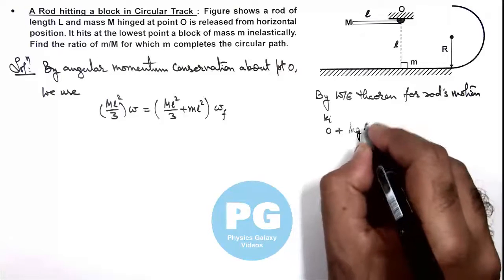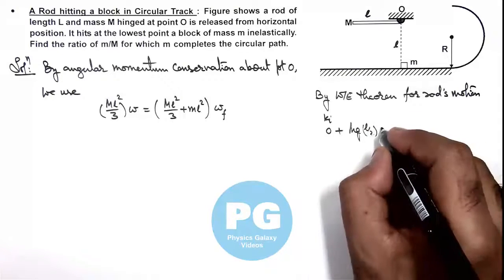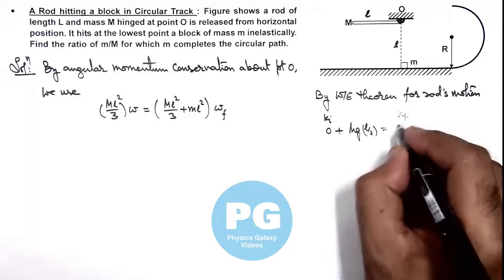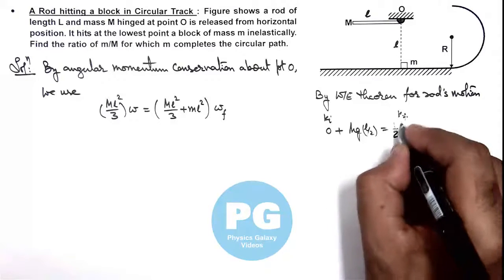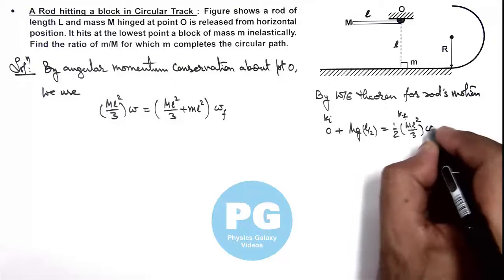Here we can write initial kinetic energy of rod was zero, plus the work done by gravity on the rod we can write as MgL by 2, must be equal to the final kinetic energy of rod, that is half ML squared by 3 multiplied by omega squared.